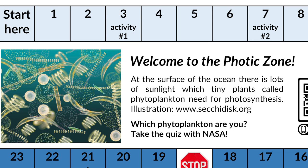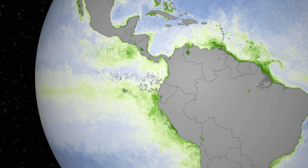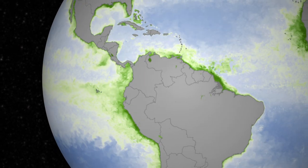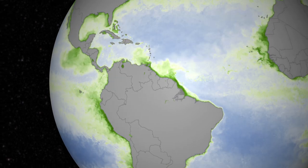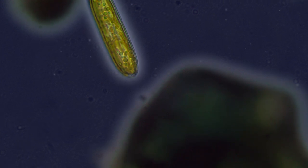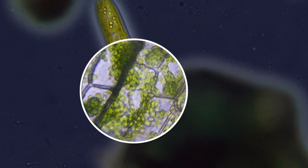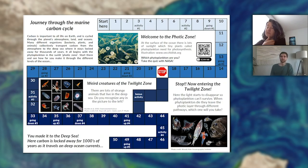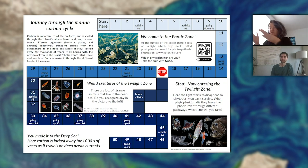We start with the phytoplankton that live in the photic zone — the part of the ocean that has sunlight, and the part we can see from satellites. From a biological perspective, it's the most important part because that's where carbon enters the biological sphere of the ocean. These tiny plants convert carbon dioxide into organic carbon, which then enters different portions of the oceanic food web and transfers down toward the twilight zone.